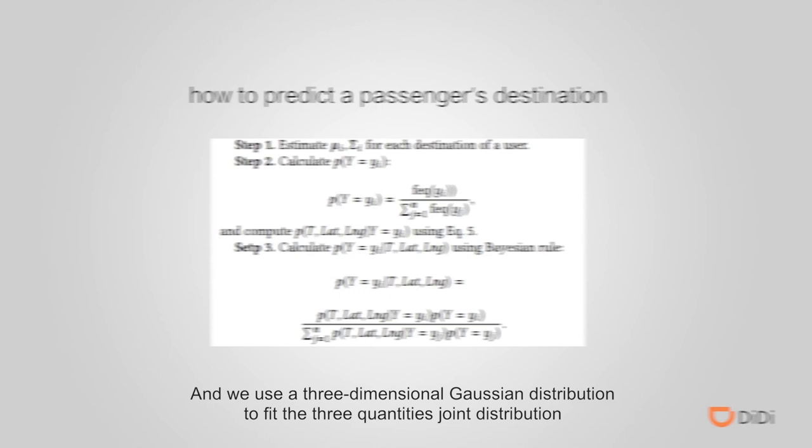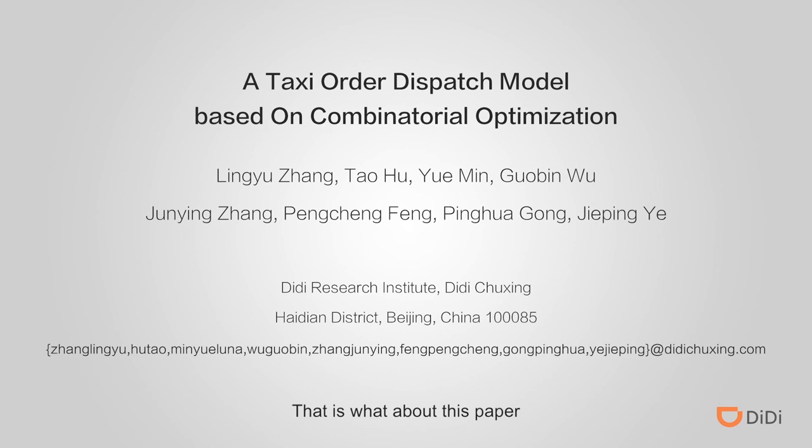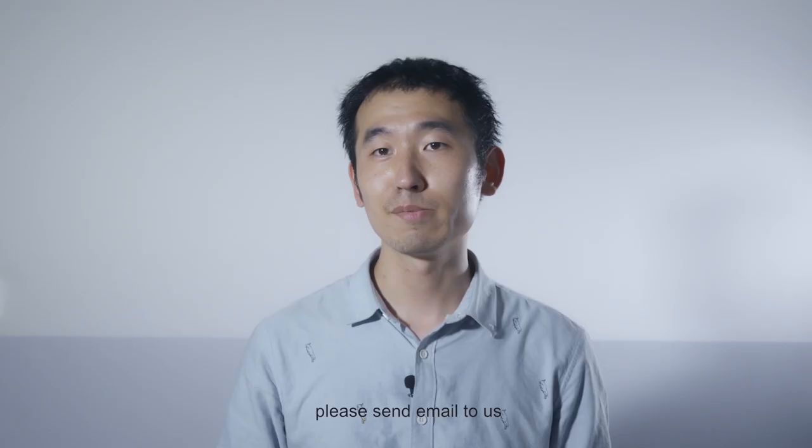At last, we use a Bayesian method to estimate the probability of each of a user's destinations. That is what this paper is about. If you want more details, please send an email to us. Thank you.